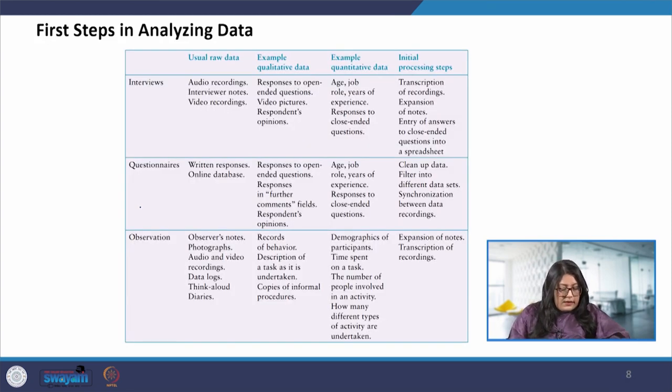Here we can see in this example what are the steps involved in analyzing the different types of data. In the interview we can see that the raw data is from audio recordings, interview notes, or video recordings. In the next table we can see the qualitative data: open-ended questions, video, pictures, and respondent opinions. The quantitative data will include the age, job, role, experience, similar kind of data. And for processing it we will use transcription of recording or we will expand the notes.